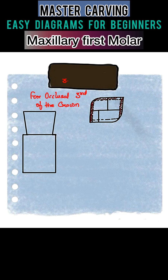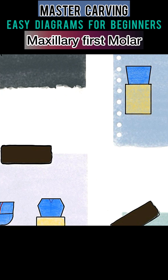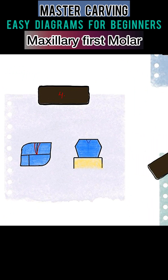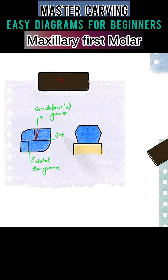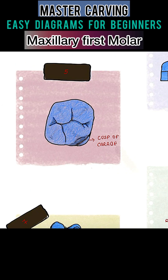For the occlusal third, remove the wax from these sides, then carve the developmental grooves and fossae. Here is the buccal groove, this one is the palatal groove, and this is the central groove. Also, don't forget to carve the cusp of Carabelli, which is present on the mesiolingual cusp.